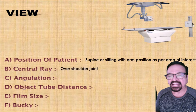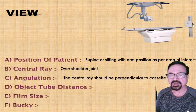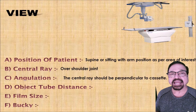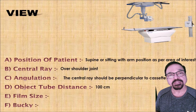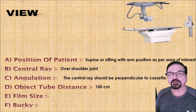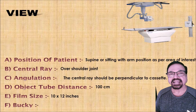The central ray is over the shoulder joint — very easy to palpate and very easy to see. It should be perpendicular to the cassette. Whatever angles we need to give, we give them to the patient. We elevate the opposite shoulder, but the cassette and central ray relationship remains unchanged.